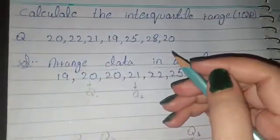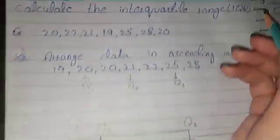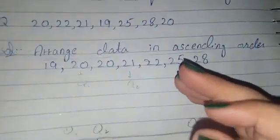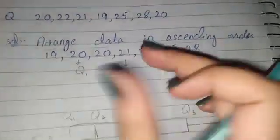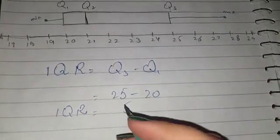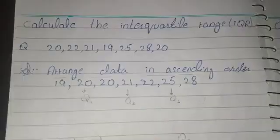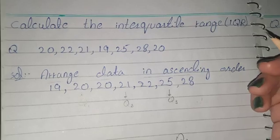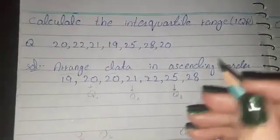To summarize: when finding the IQR, arrange the data in ascending order, find Q1, Q2, and Q3 as shown, then apply the formula Q3 minus Q1 to find the IQR. If you like the video, please like and subscribe to my channel. Thanks for watching — take care.